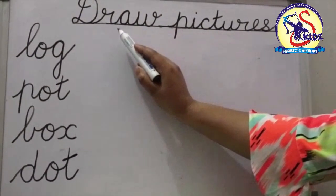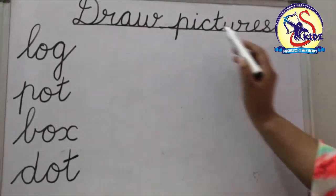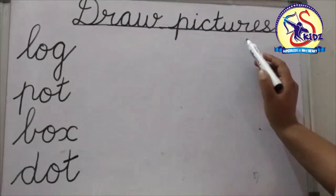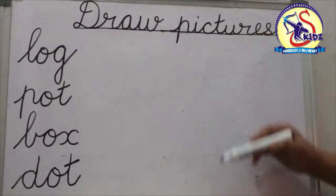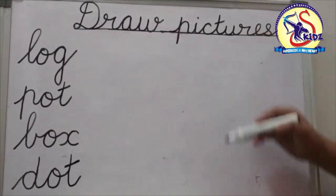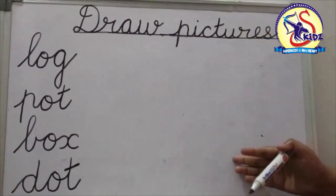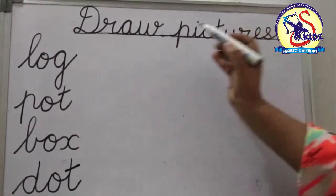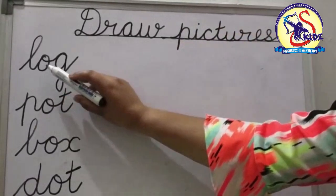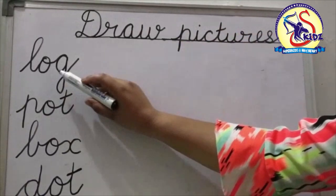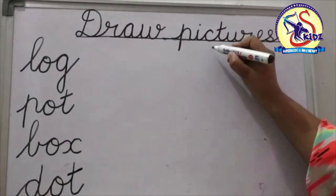Now we will do our next exercise: draw pictures. Here are some words given and we have to draw the pictures. Now see the first word: L-O-G, log.